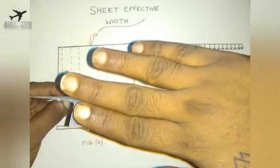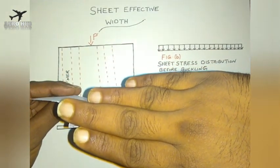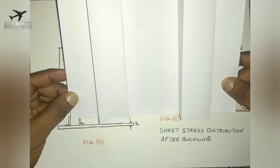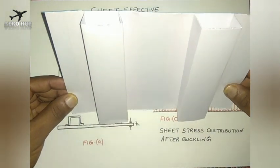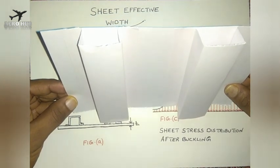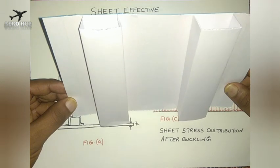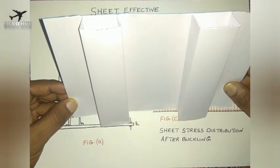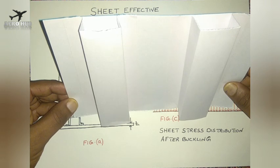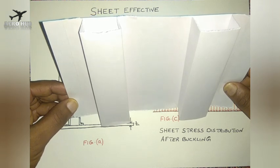When I apply a compressive load, at the initial application of load, the stress distribution of the entire plate and the stiffness are the same. I am assuming that the material used for the sheet as well as the stiffeners are the same — I am not using different materials here. But in practical cases, we use different materials for the sheet or thin plate and the stiffeners.